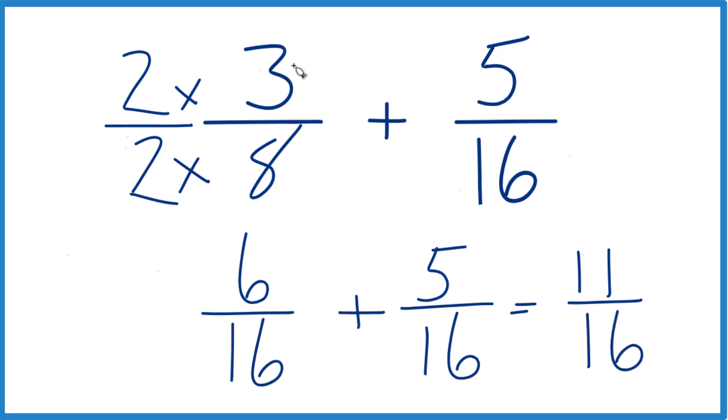So in answer to our question, 3 eighths plus 5 sixteenths, that equals 11 sixteenths. This is Dr. B, and thanks for watching.